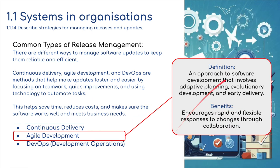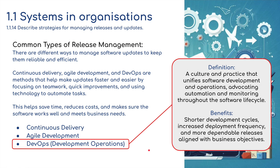Agile development is an approach to software development that involves adaptive planning, evolutionary development, and early delivery. It encourages rapid and flexible responses to changes through collaboration. DevOps — development operations — is a culture and practice that unifies software development and operations, advocating automation and monitoring throughout the software lifecycle. The benefits include shorter development cycles, increased deployment frequency, and more dependable releases aligned with business objectives.